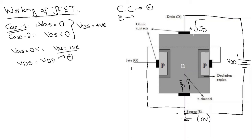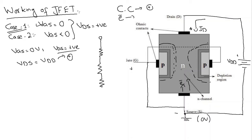The depletion region becomes wider as we move toward the top. We have two depletion regions, and as we move upward the depletion region becomes wider compared to the bottom. The reason for this wider depletion region is that the n-type channel provides obstruction to the flow of electrons — so this n-type channel acts as a resistor. I can divide this channel into four equal resistances.